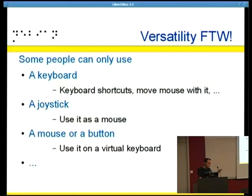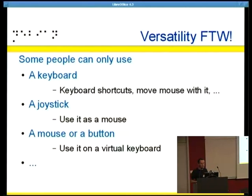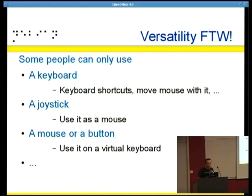With motor disabilities, some people may be able to use only some things — like just the keyboard. They cannot use the mouse, so you can use keyboard shortcuts, or use something to move the mouse with the keyboard. Maybe they can only use a joystick — they cannot even move a mouse — and then you make a mouse out of this. And if you only have a joystick or one button and want to type text, you can use a virtual keyboard. There are many things you cannot even imagine because you never know what people may need.